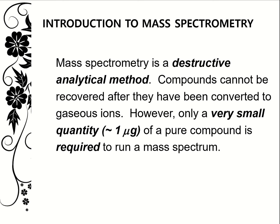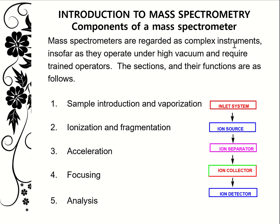While mass spectrometers are very complex instruments, we need a general understanding of how they work. They operate on high vacuum and require trained operators. The instrument has five components: sample introduction and vaporization, ionization and fragmentation from the ion source, acceleration, focusing and analysis, and finally ion collection and detection.